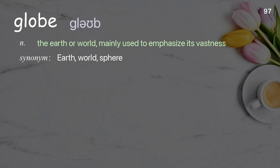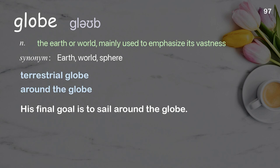Globe: the earth or world, mainly used to emphasize its vastness. Examples: terrestrial globe; around the globe. His final goal is to sail around the globe.